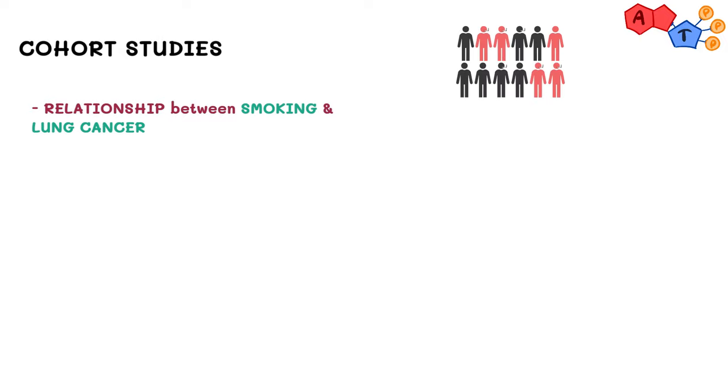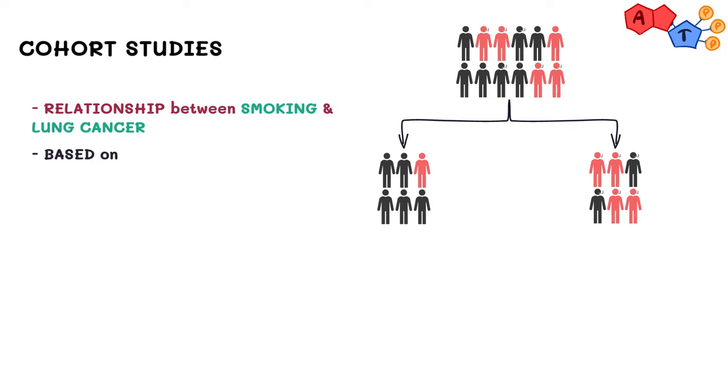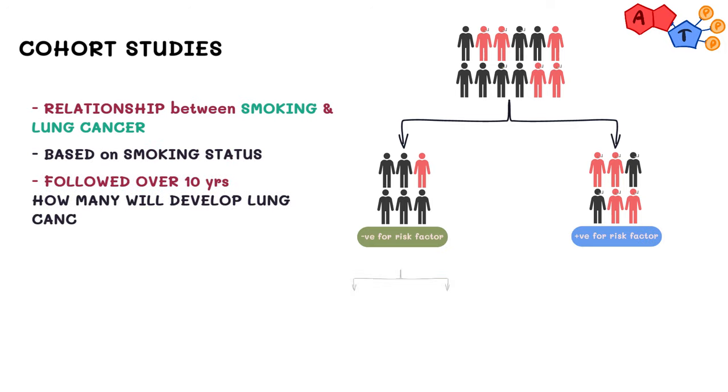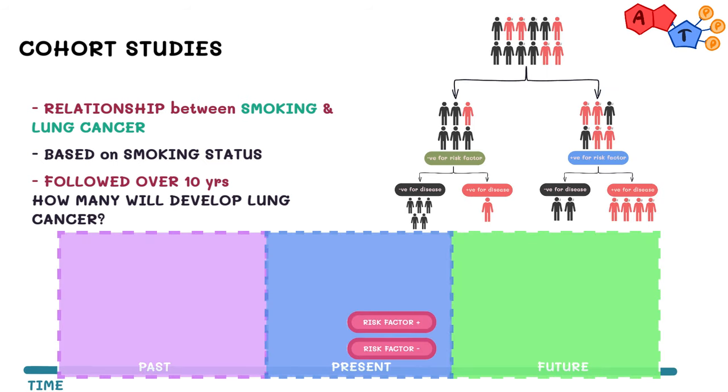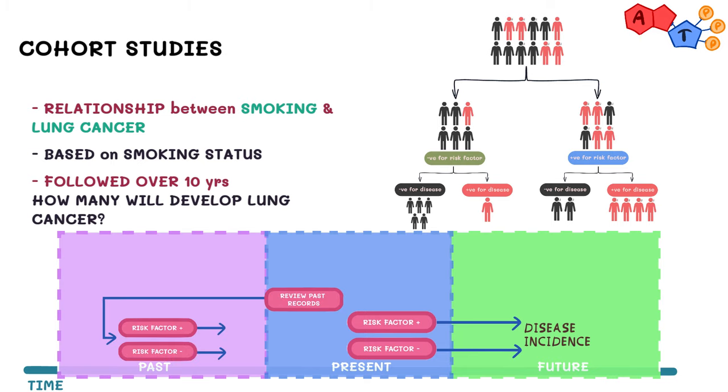An example of a cohort study would look like this. Let's say a study was made to see whether there was any relationship between smoking and lung cancer. Participants were divided into two groups based on their smoking status, and were followed for 10 years to see how many from each group would develop lung cancer. Notice how we first divide the groups by risk factor, not by the outcome of interest. Look for key words that suggest if they're going forward in time, as is the case here, or backwards in time, to figure out whether it's prospective or retrospective, respectively.